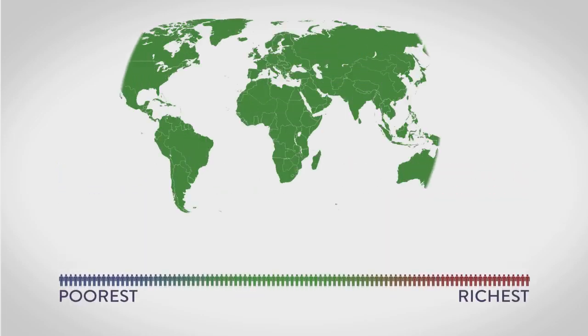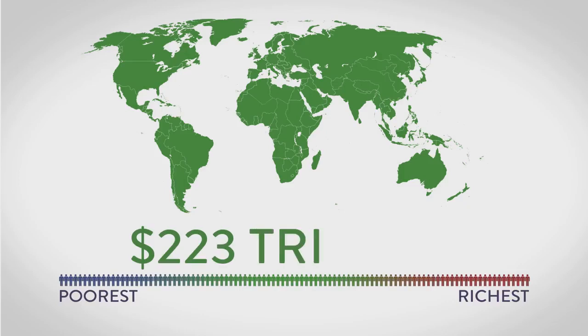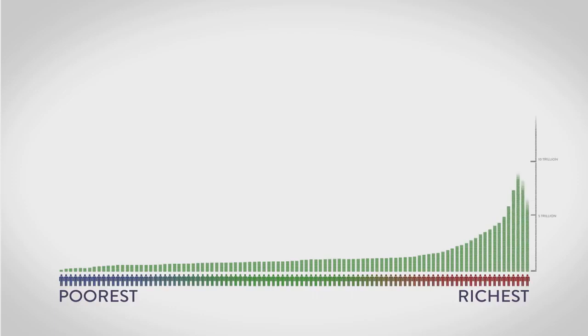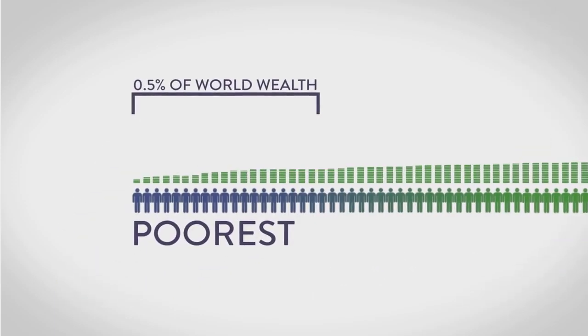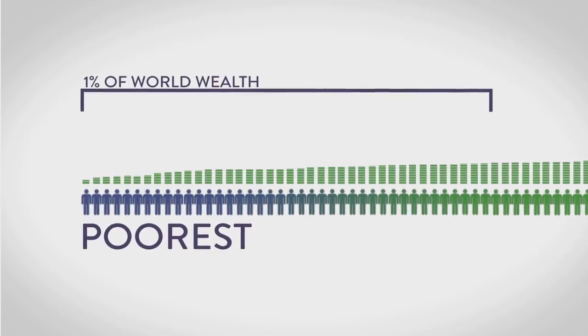Now let's show how the world's total wealth, roughly 223 trillion dollars, is distributed. The vast majority have practically nothing. Nothing with which to educate their children, nothing with which to pay for basic medicines.